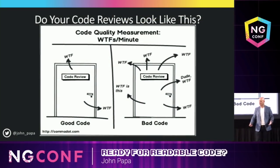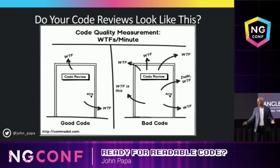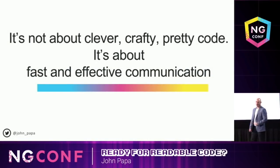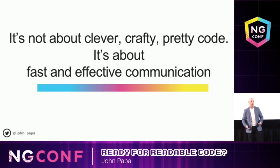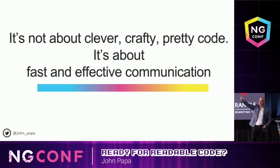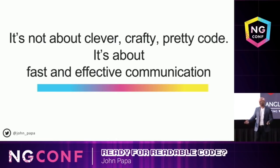So what can we do? Even think about code reviews. We measure code reviews on the amount of time it takes to understand what's happening. It's not about writing code, not about being clever, crafty, or artful. We always hear, 'Hey, I wrote this really awesome thing — it's a nested ternary function.' You're like, get out.